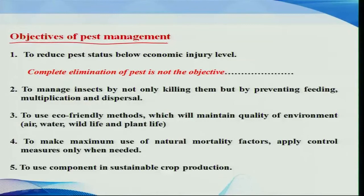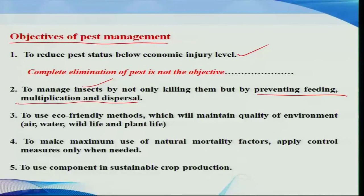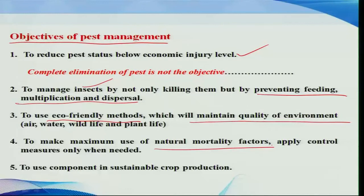The overall objectives of pest management are: always reduce the pest below the economic injury level — one should not aim for 100% eradication of the pest; manage insects not only by killing them but by preventing feeding and their multiplication and dispersal; use the most eco-friendly methods to maintain quality of environment including air, water, wildlife, and other plant life systems; and always make use of natural mortality factors in control measures. Ultimately, the IPM components should be sustainable in crop production.